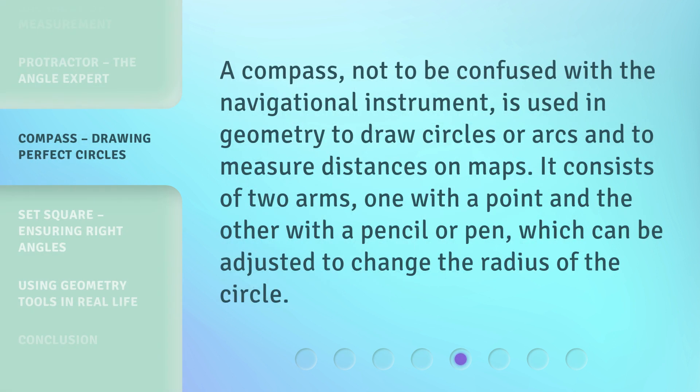A compass — not to be confused with the navigational instrument — is used in geometry to draw circles or arcs and to measure distances on maps. It consists of two arms, one with a point and the other with a pencil or pen, which can be adjusted to change the radius of the circle.